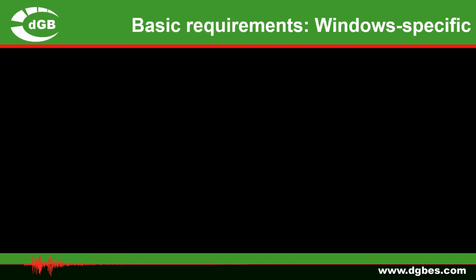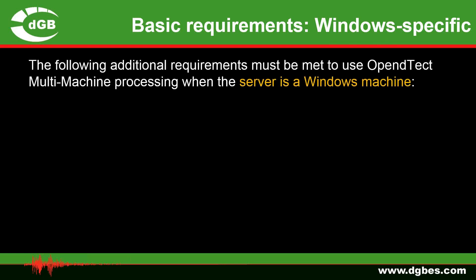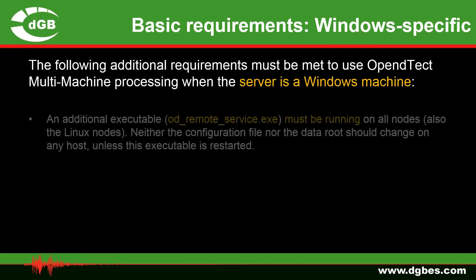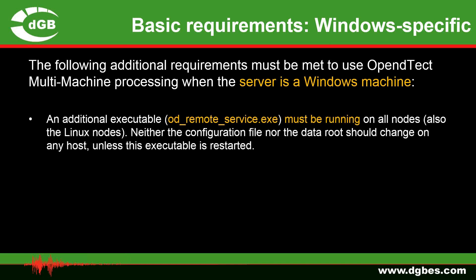Now we look at some platform-specific requirements, first for Windows. If the server is a Windows machine, then an additional executable — the OD remote service — must be running on all nodes, and this includes the Linux nodes. Neither the configuration file nor the data route should change on any host unless you restart this executable.